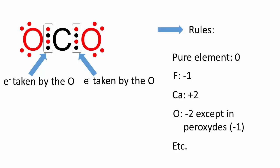Later on in the semester, we will see how we can determine oxidation states simply using Lewis dot structures. But for now, we will be given a set of rules, such as a pure element always has an oxidation state of zero, fluorine is always negative one, calcium is always positive two, and oxygen is usually negative two, except in peroxide where it's negative one.